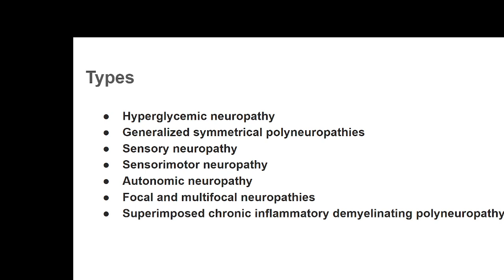Clinically, diabetic neuropathy is further categorized as: hyperglycemic neuropathy — directly related to blood sugar level; generalized symmetrical polyneuropathy; sensory neuropathy; sensory-motor neuropathy; autonomic neuropathy; focal and multifocal neuropathies; and superimposed chronic inflammatory demyelinating neuropathy. Hyperglycemic neuropathy, if blood sugar is reduced, may show clinical improvement — constituting only a few patients, particularly those freshly diagnosed through neuropathy presentation.